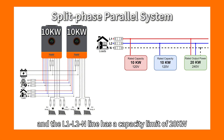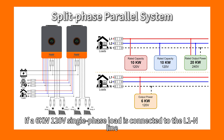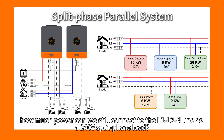The L1-L2 line has a capacity limit of 20kW. If a 6kW 120V single-phase load is connected to the L1-N line, how much power can we still connect to the L1-L2-N line as a 240V split-phase load?